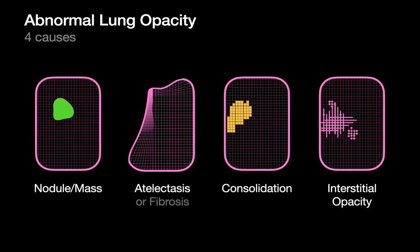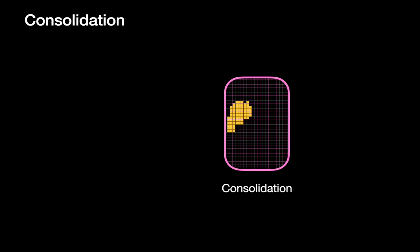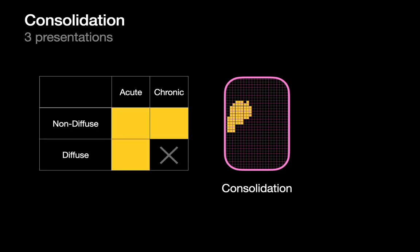There are four basic reasons why you may encounter an abnormal opacity in the lung. This talk is going to focus on consolidation. When interpreting consolidation, it's helpful to divide your approach based upon the time frame of the consolidation and its distribution within the lungs. We're going to be talking about the approach to chronic non-diffuse consolidation in this talk.